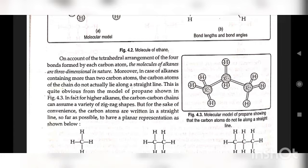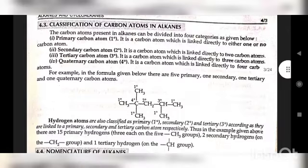Similarly, in ethane and higher alkanes, the relative arrangement of bonds is always tetrahedral, although different bond angles may be slightly different from the regular tetrahedral value of 109°28′. The C–H bond length is about 110 pm while the C–C bond length is 154 pm (1.54 Å). On account of the tetrahedral arrangement, molecules of alkanes are three-dimensional in nature. In alkanes containing more than two carbon atoms, the carbon atoms of the chain do not actually lie along a straight line, as seen from the model of propane.